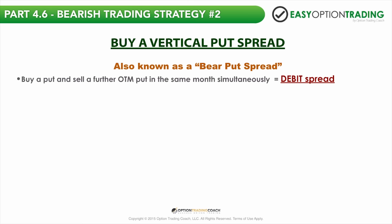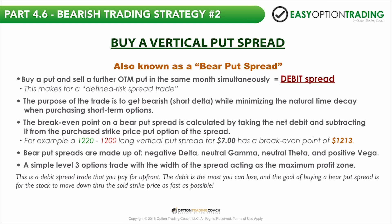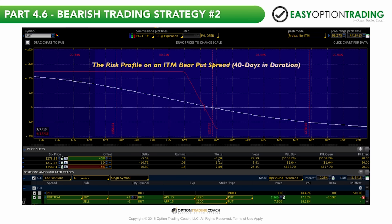To buy a vertical put spread, you buy a put and sell a further out-of-the-money put in the same month — this is an example of a debit spread. The goal of buying a bear put spread is for the stock to move down through the sold strike price as fast as possible. As the trade manifests, you can see a slight change up or down in your theta risk and also your vega risk. The main thing you want to understand is where your break-even is — looking at this example, you can see the red line break-even is right here at $12.13, really about $12.50, because we're taking this $7.50 debit and subtracting it from the purchased put option.